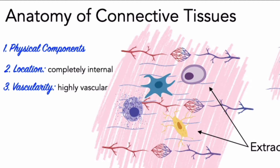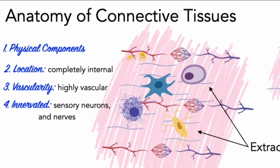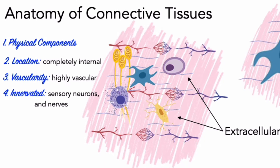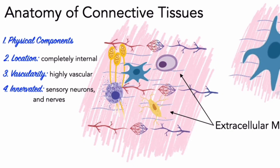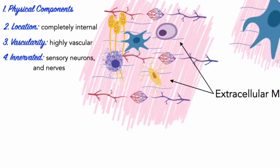Fourth, connective tissue is innervated. This is a similarity to epithelial tissues. Connective tissues contain sensory receptors that detect pain, pressure, temperature, and other stimuli. Moreover, connective tissues provide pathways for nerves to reach target organs and cells.